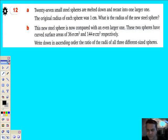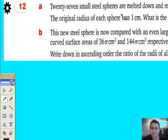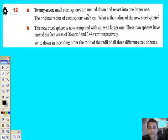Page 107. I'm going to try and do question 12 just straight off. 27 small spheres are melted down, small steel spheres—ball bearings I suppose—are melted down and recast into a bigger ball.